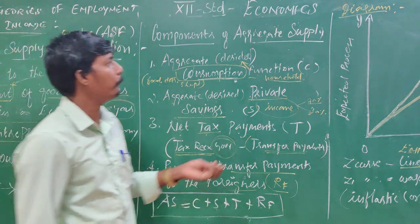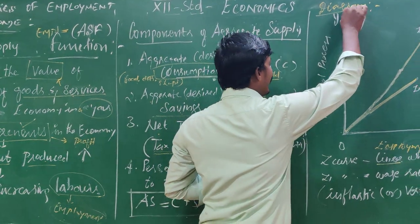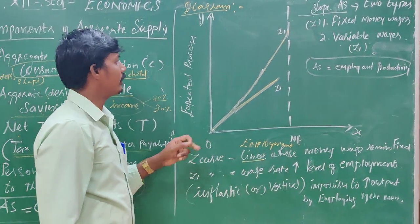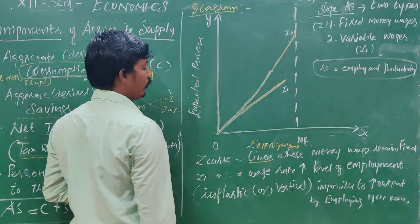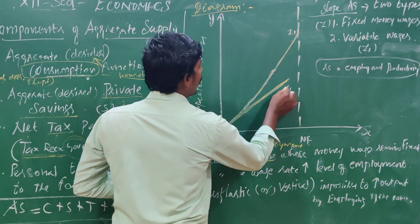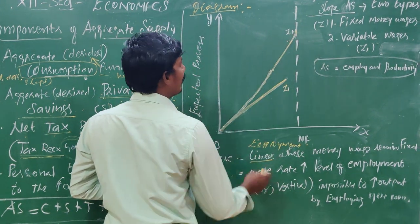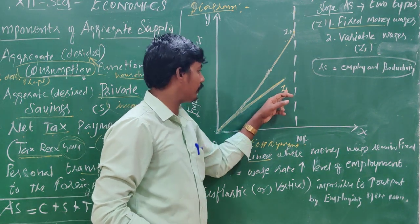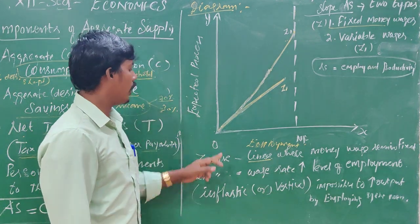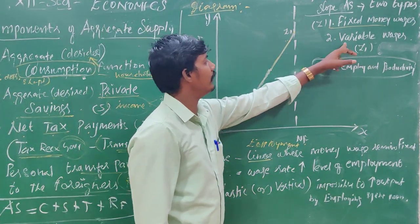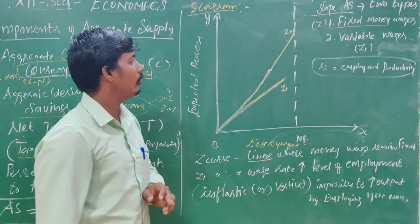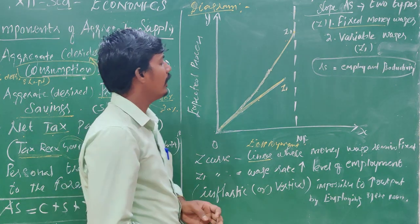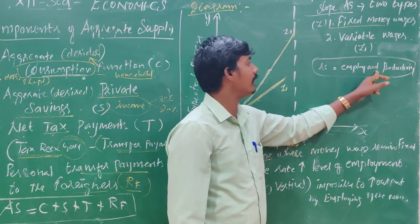Employment is on the Y-axis, and the X-axis represents the process. We have two types of aggregate supply slope. One is Z and the second one is Z1. If the curve is fixed, then Z is fixed. If you have variable wages, variable wages are fixed. The aggregate supply shows the relationship between employment and productivity.